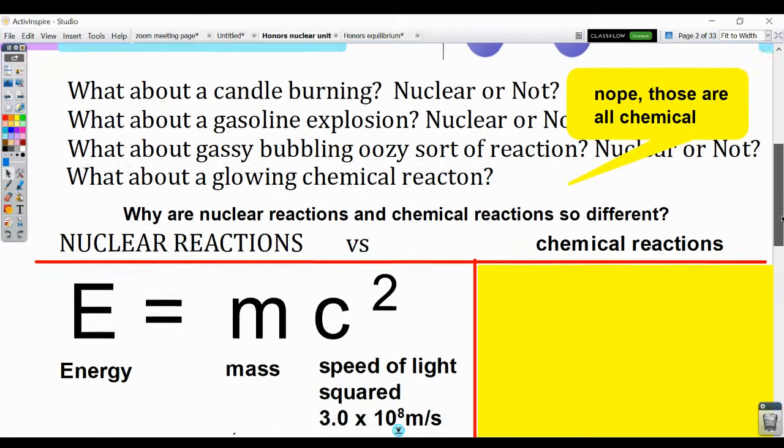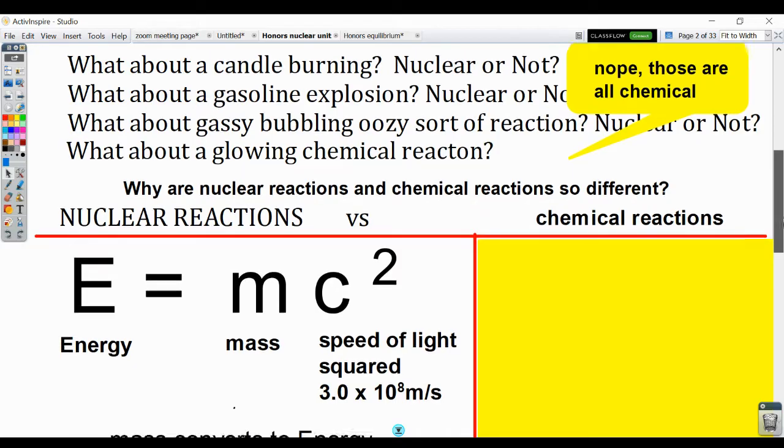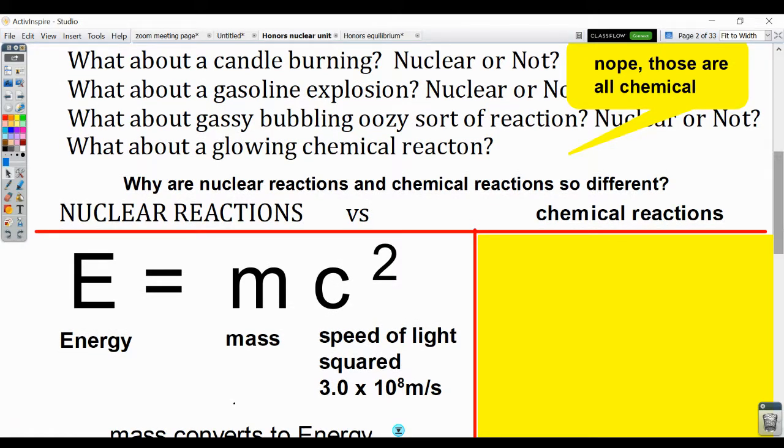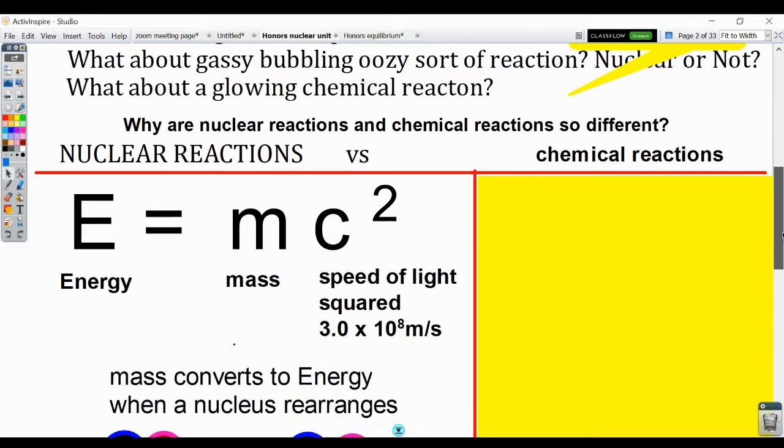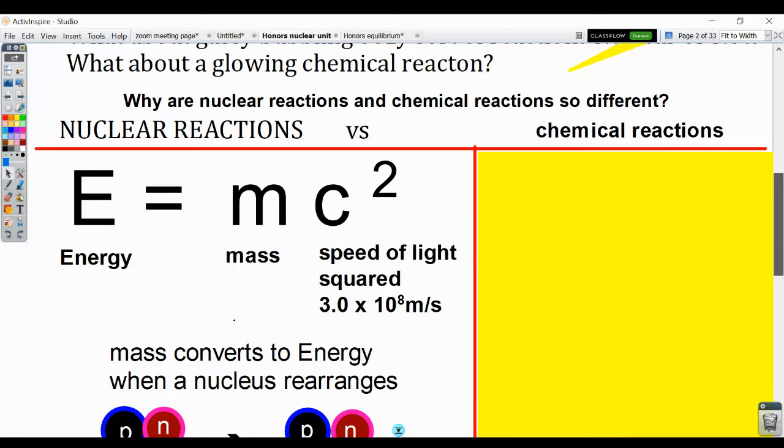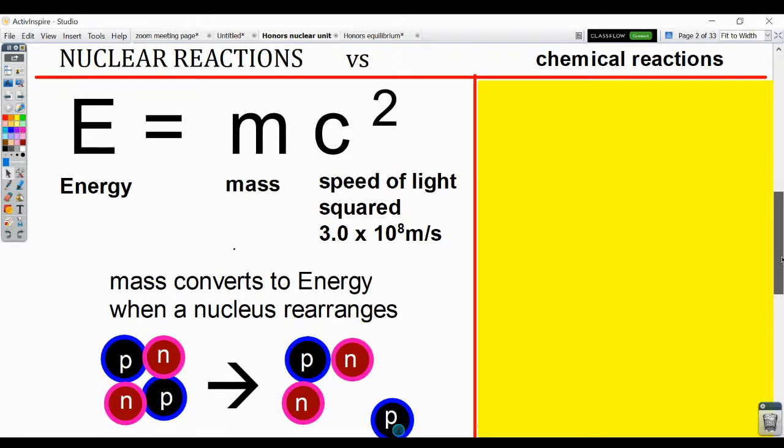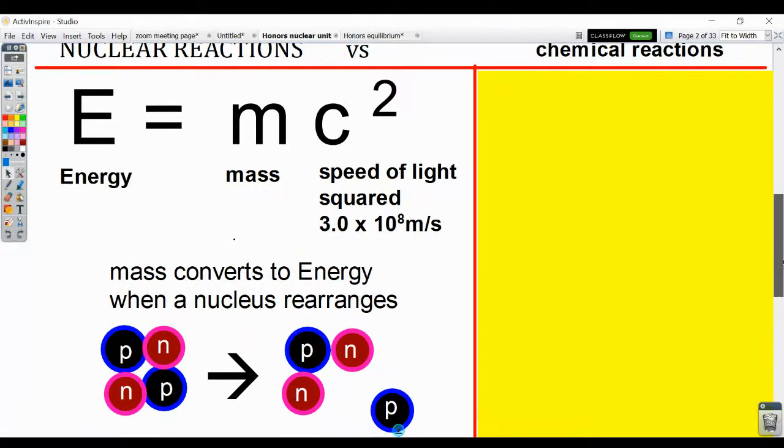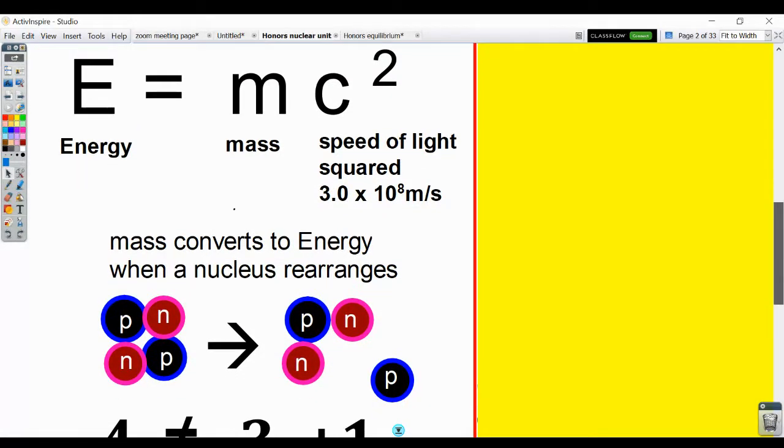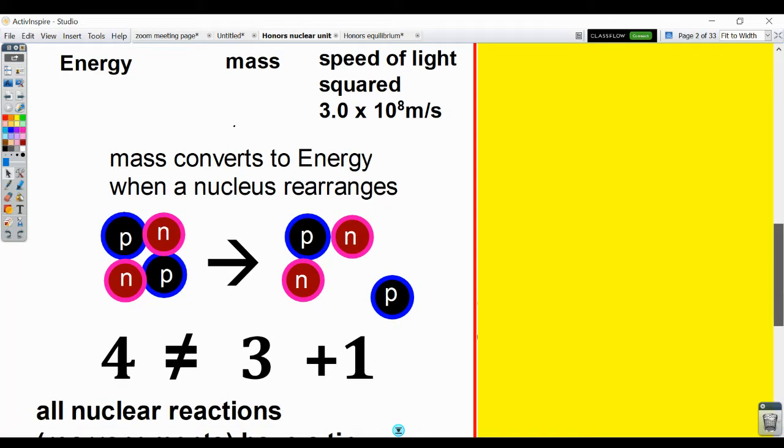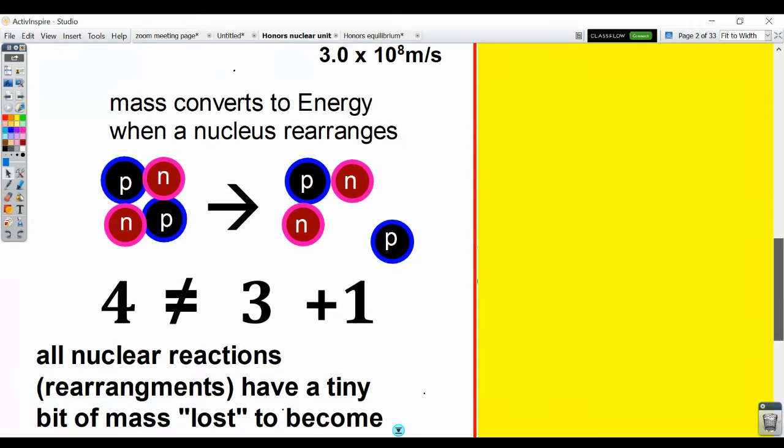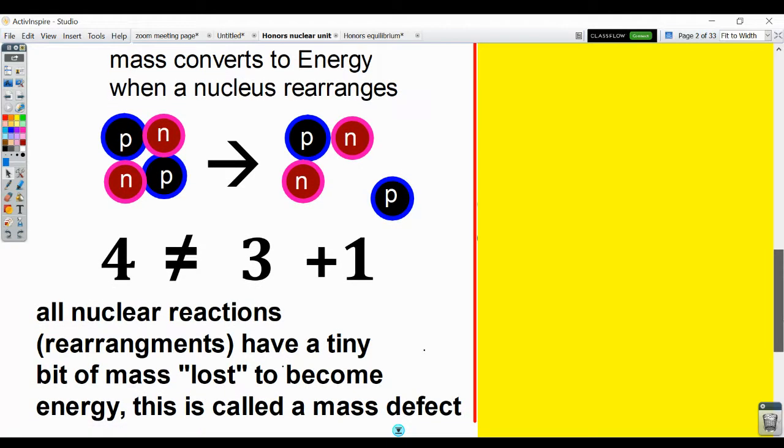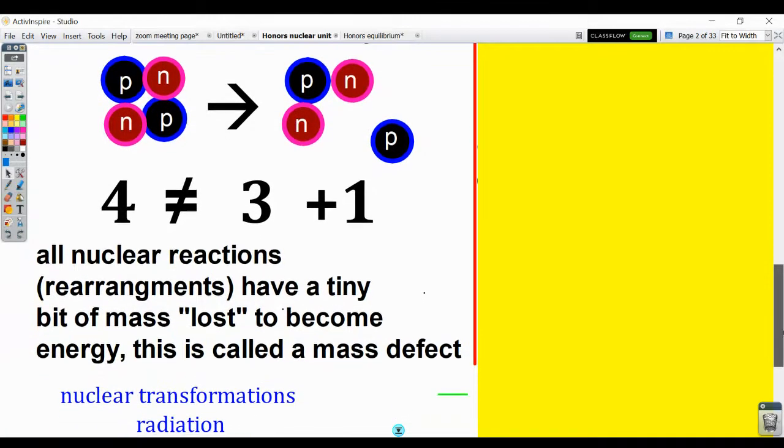Why are nuclear and chemical reactions so different? We're going to start by taking a look at nuclear reactions and the energy associated with nuclear reactions. The energy associated with nuclear reactions comes from something entirely unique to nuclear reactions, where mass is actually being converted to energy. How do you convert mass to energy? Well, it turns out that when you rearrange protons and neutrons in a nucleus, the masses of those rearranged protons and neutrons are not exactly the same. There is a small amount of mass lost. We call that a mass defect.